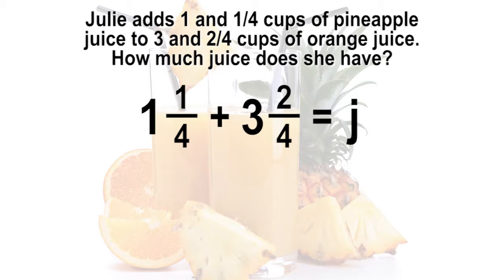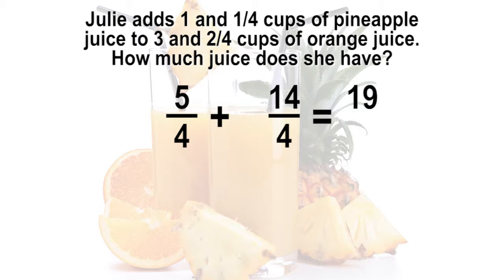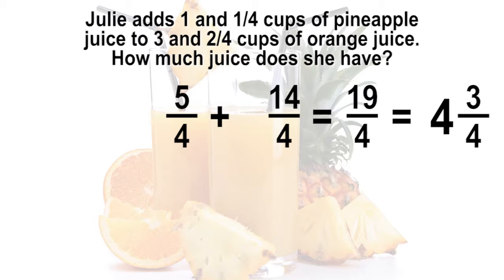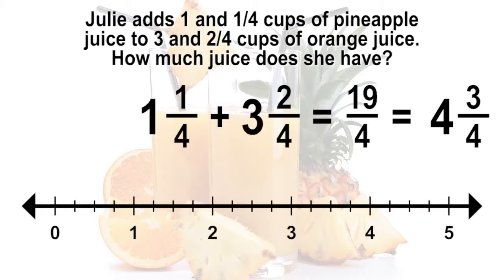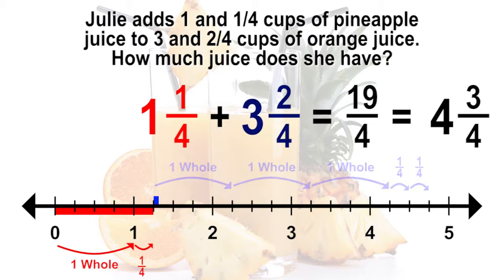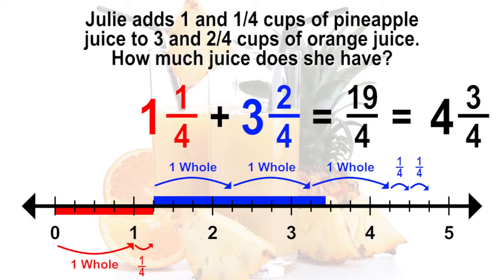A possible strategy would be to change the mixed numbers to equivalent fractions in fractional form before adding. The one and one-fourth cups of pineapple juice becomes five-fourths, and the three and two-fourths cups of orange juice becomes fourteen-fourths. Add five plus fourteen to get nineteen-fourths, which can be written as the mixed number four and three-fourths cups of juice. This strategy might be justified using a number line partitioned into one-fourths segments. One and one-fourth can be represented as four-fourths plus one-fourth, which is five-fourths. Then add three wholes, or three groups of four-fourths, plus two more fourths, landing us on four and three-fourths cups.